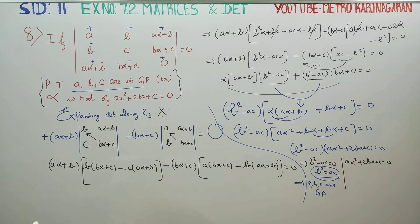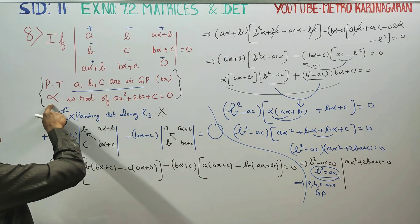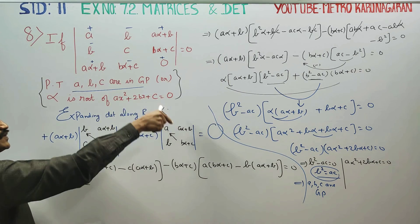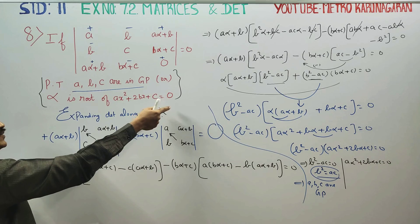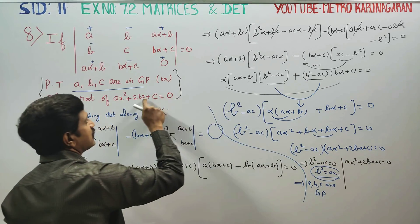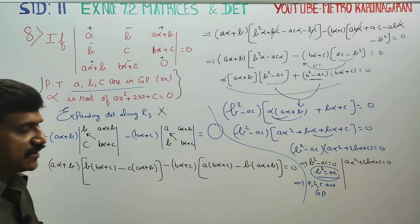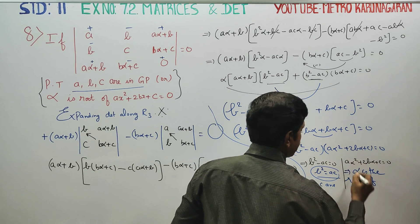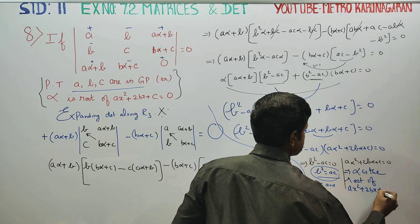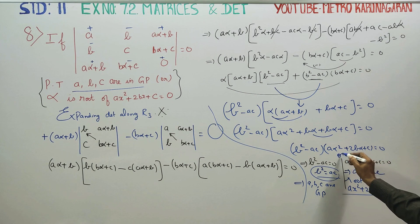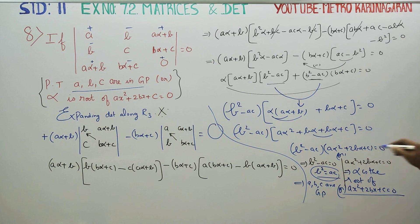Alpha is the root of the equation ax² + bx + c equals 0. If alpha is the root, then substituting alpha: a·alpha² + b·alpha + c equals 0. That is how we declare the sum. The answer is complete. Thank you.